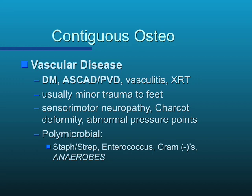Contiguous osteo may be vascular disease associated — that's where we see patients with diabetic feet, peripheral vascular disease, vasculitis, or radiation therapy with blood vessel damage. In diabetics or people with neuropathic feet, it starts with minor trauma and abnormal pressure points. The tissue breaks down and eventually reaches the bone. Again, it's polymicrobial, and you should not forget the possibility of anaerobes in these infections.